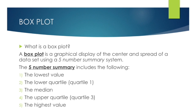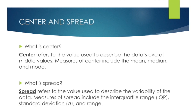A box plot is a graphical display of the center and spread of a data set, and it uses a five-number summary system. The five-number summary is: the lowest value, the lower quartile (also known as Quartile 1), the median (also known as Quartile 2), the upper quartile (also known as Quartile 3), and the highest value. You might also see the 25th percentile used to refer to the lower quartile, and the 75th percentile for the upper quartile.